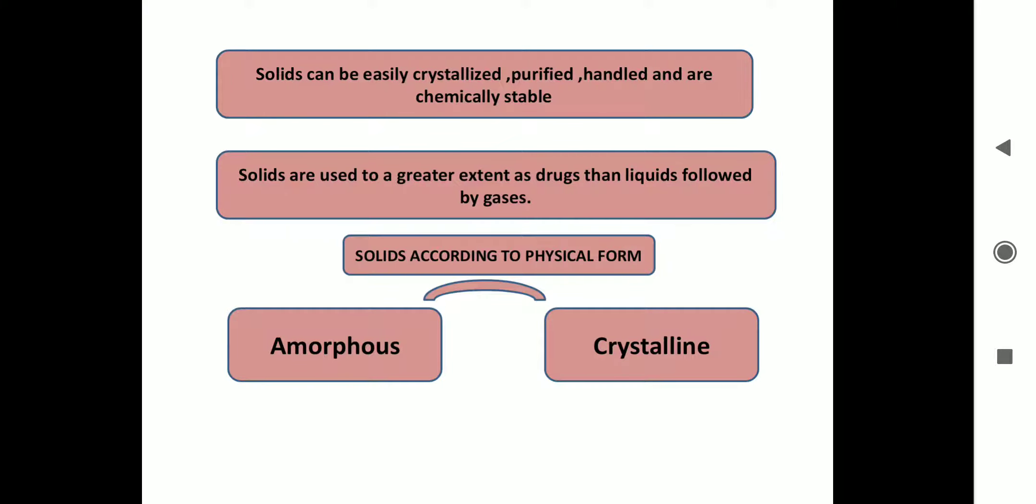When we talk about physical form, we are more concerned about solids. There are some properties of solids. Solids can be easily crystallized, purified, handled and are chemically stable. Solids are used to a greater extent as drugs than liquids followed by gases. According to the physical form, solids can be classified as amorphous or crystalline.